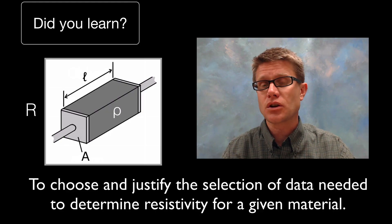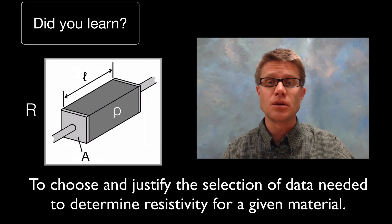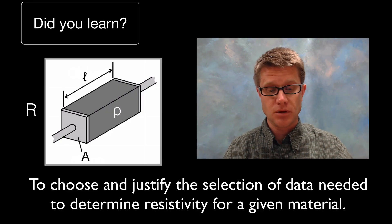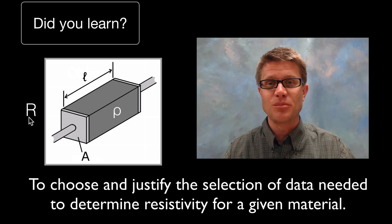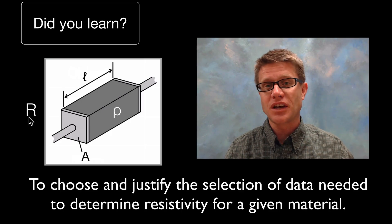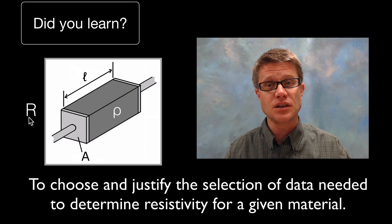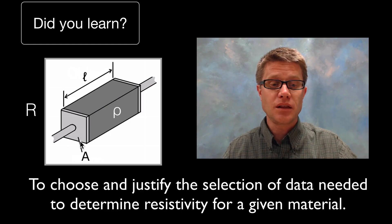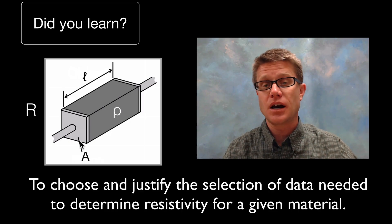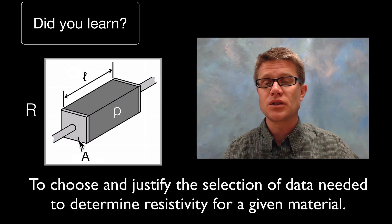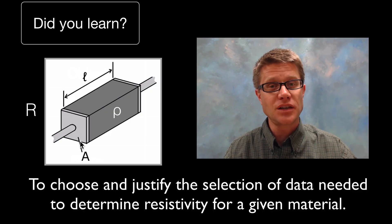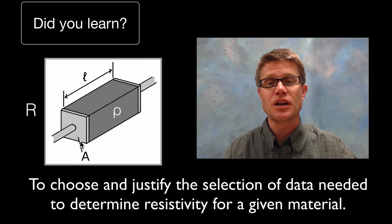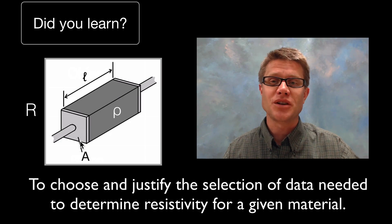To measure resistivity in a material, you would use a precise measuring device to measure the resistance of a resistor, then look at the cross-sectional area and the length, and then simply solve for resistivity. Resistivity is innate in all materials — it's based on their structure and it opposes flow. I hope that was helpful.